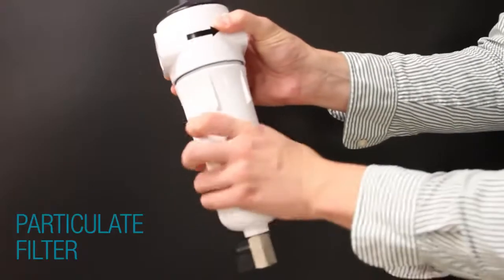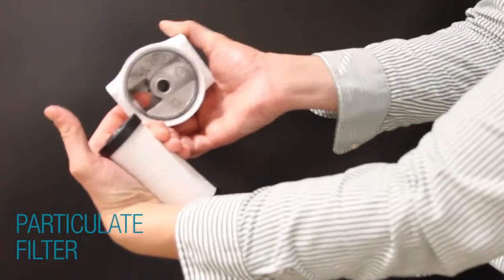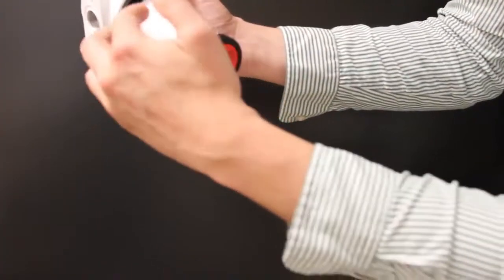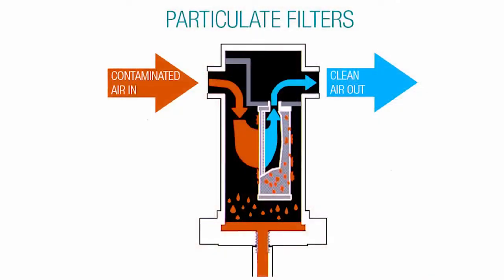On a particulate filter, you will notice the flow is going to the sides of the element. The contaminated air is no longer flowing down the center like on a coalescing filter. The contaminated air is being forced through the sides and into the center of the element.